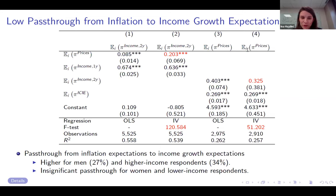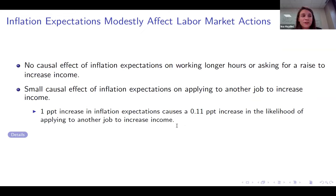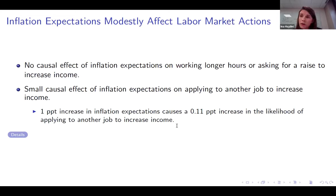The main result shows that the pass-through from inflation expectations to income growth expectations is very incomplete, in the order of about 20%. In the other direction, we do not find a significant pass-through going from income growth expectations to inflation expectations. The pass-through from expected inflation to expected income growth is higher for men and greater for higher-income respondents, but remains insignificant for women and lower-income respondents. On labor market actions, we find no causal effect of inflation expectations on respondents' likelihood to work longer hours or ask for a raise, but a small causal effect on the likelihood of applying for another job — a one percentage point increase in inflation expectations leads to a 0.11 percentage point increase in that probability.